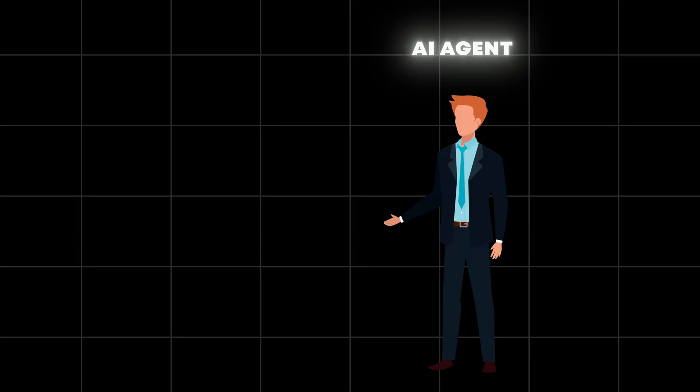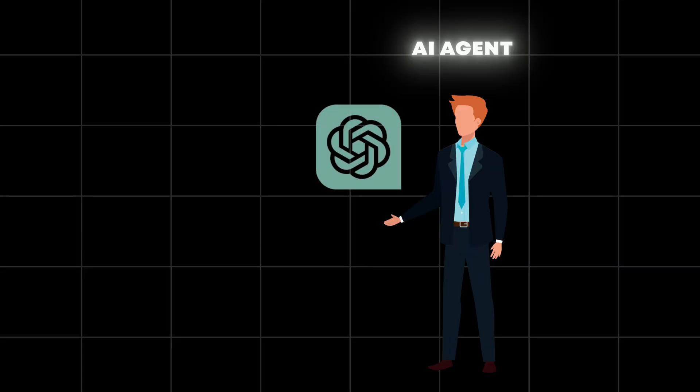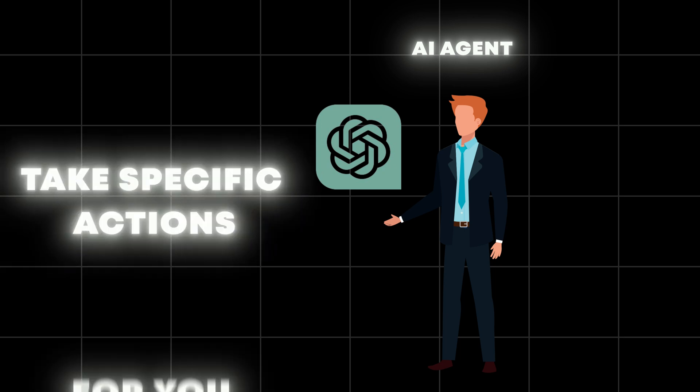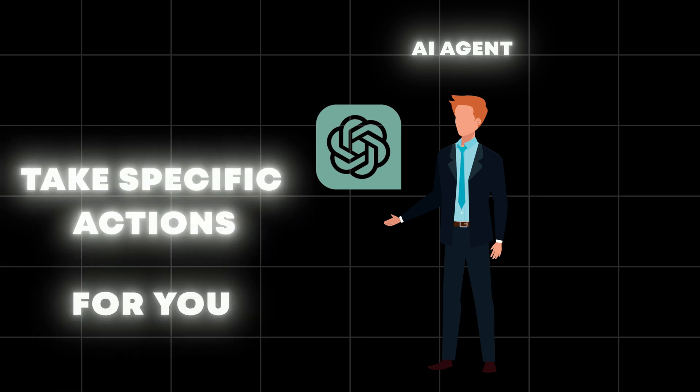An AI agent is using AI to take specific actions for you outside of ChatGPT. And we're going to be using MyGPT apps to do this.